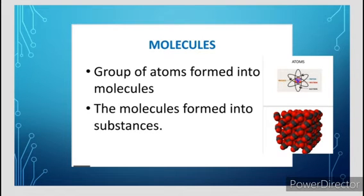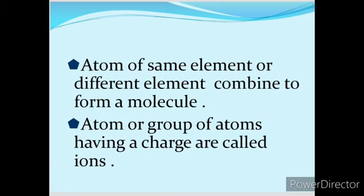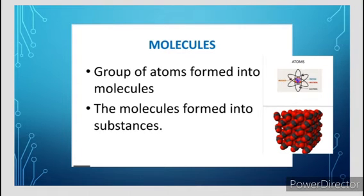Atom is the smallest particle of an element. Atoms of the same element or different elements combine to form a molecule. The molecules are made up of atoms. The group of atoms having a charge is called ions - that is a positive or negative charge. Atoms of the same element or different elements combine to form a molecule.